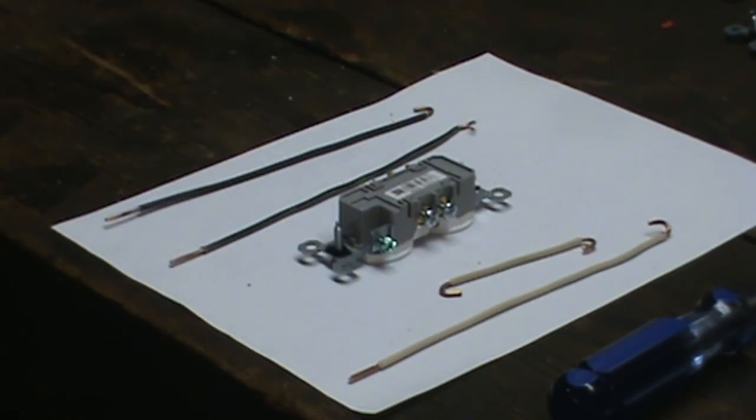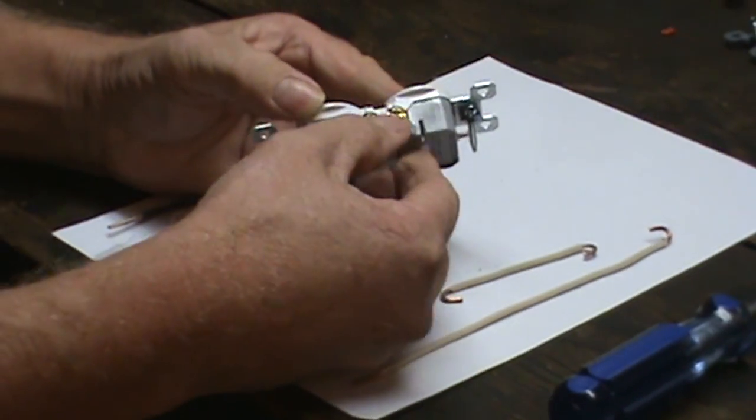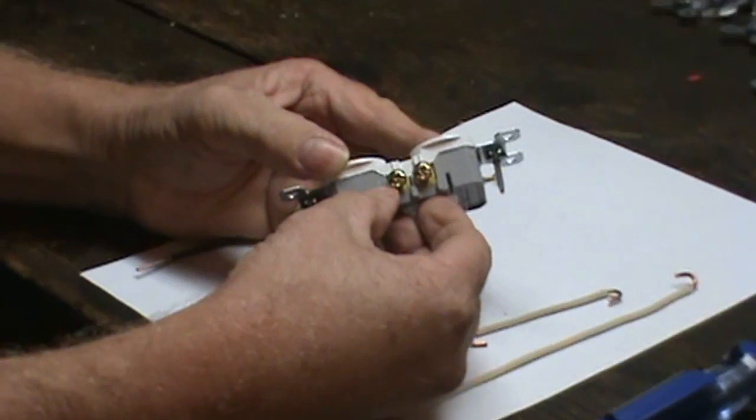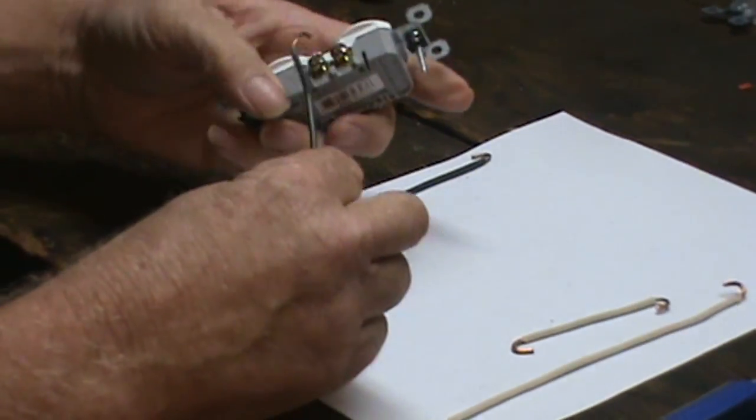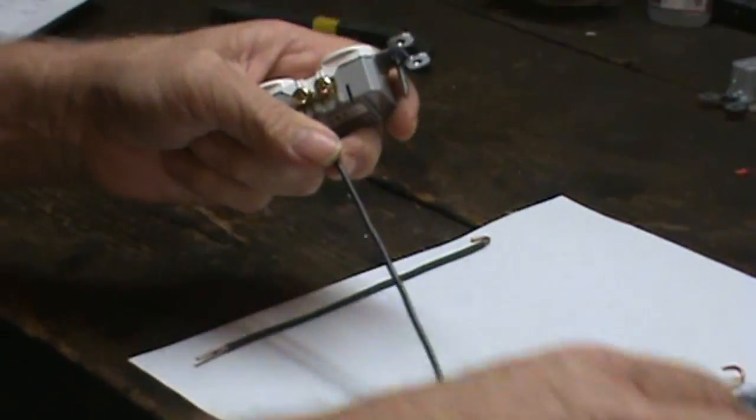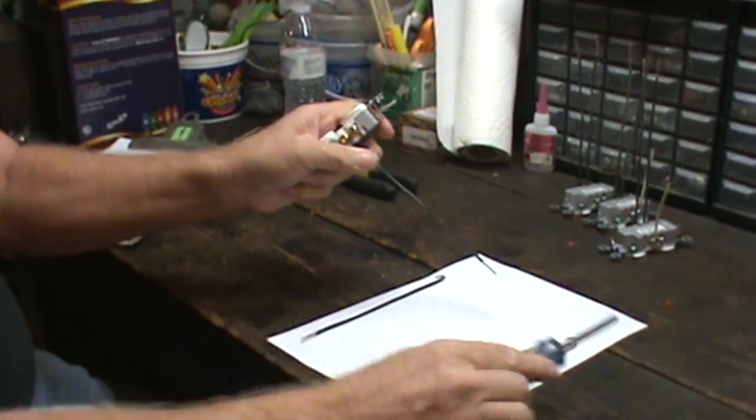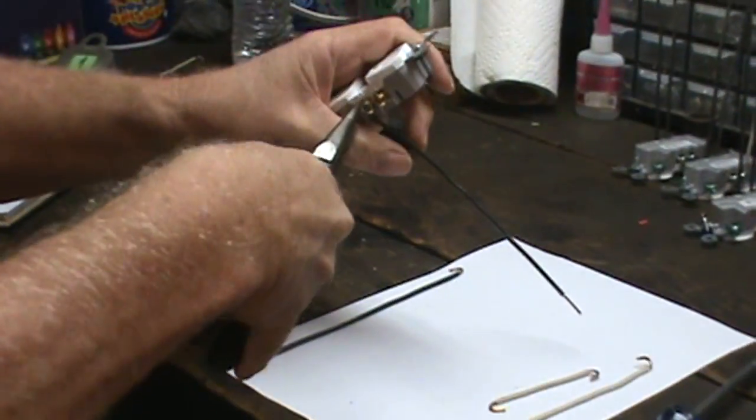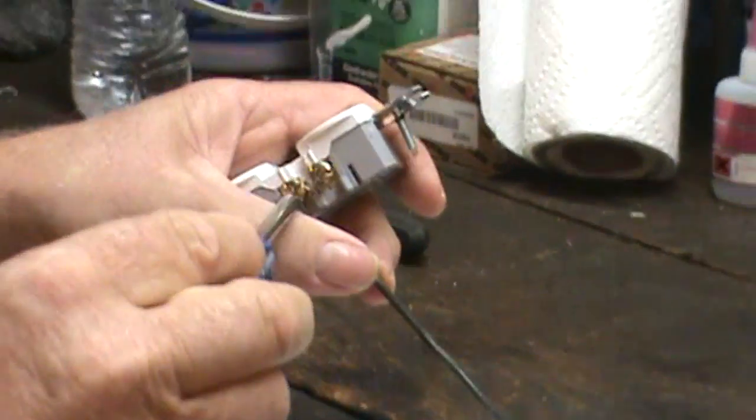We're going to begin wiring the sockets up. First on the hot side, which is your brass colored screws, the side we broke the tab off of, we're going to put both black wires. If your loop's not quite tight enough, it's getting caught, tighten it up a little bit with your needle nose.